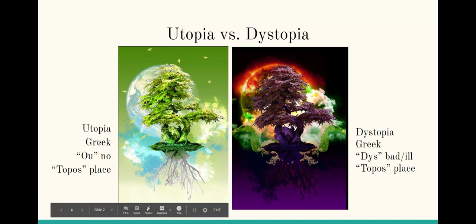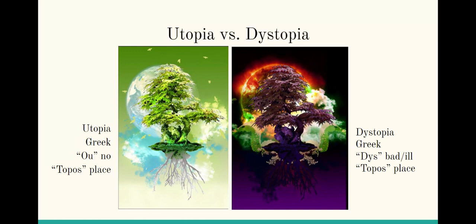There are a few utopian books that are popular, 'Utopia' being the most well-known. There were some books in the 19th century that were utopian romances — stories of people falling in love and social change. Some of the most famous of those were 'Looking Backward' by Edward Bellamy or 'A Modern Utopia' by H.G. Wells.